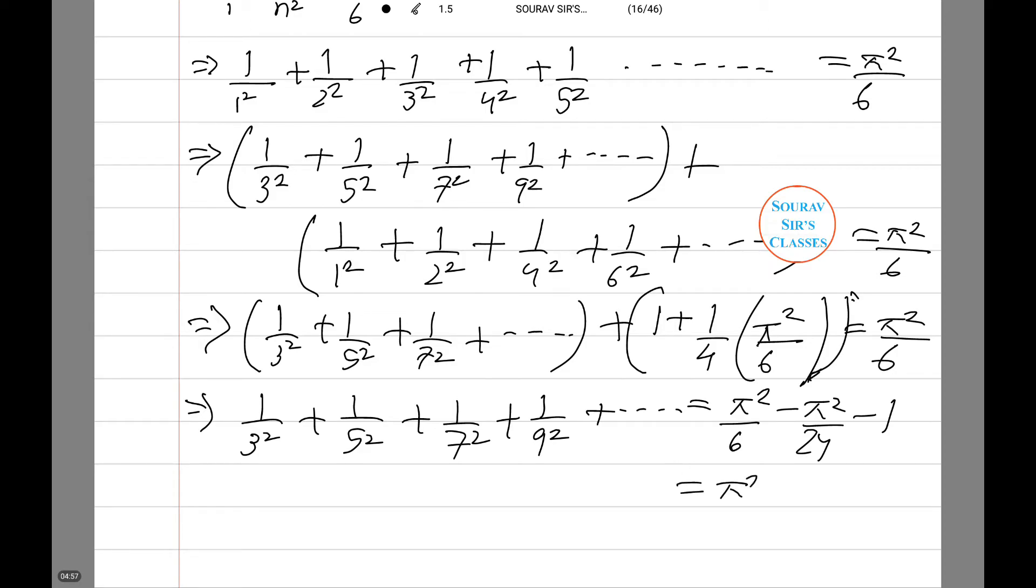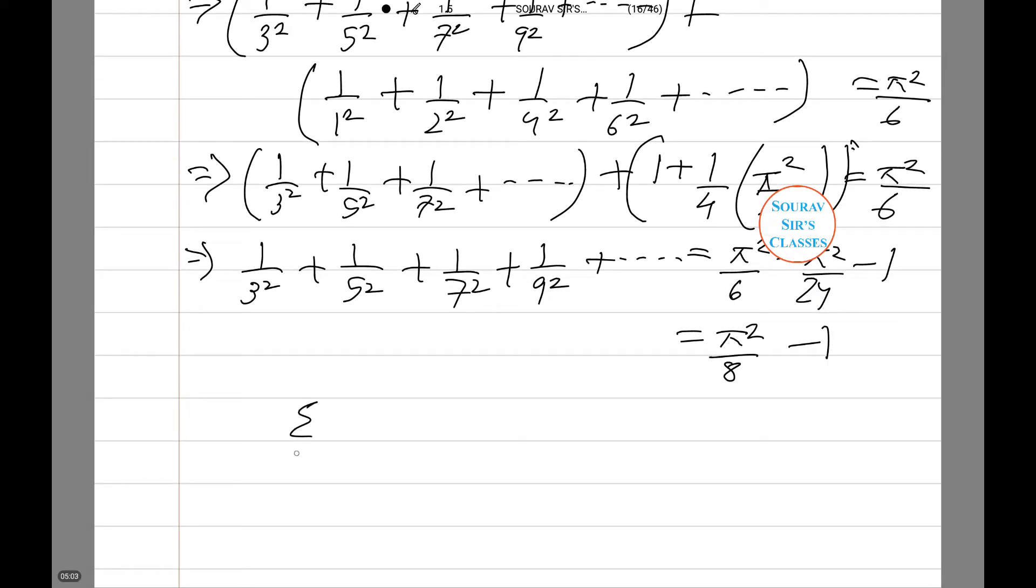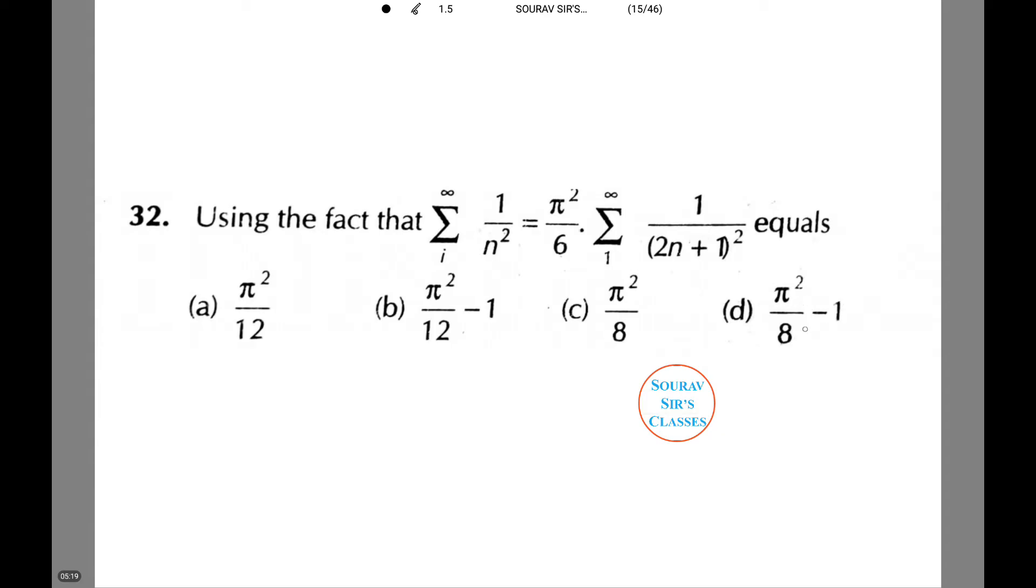Upon calculation, this comes as π²/8 - 1. Therefore, Σ(1 to ∞) 1/(2n+1)² equals π²/8 - 1. Hence, let's see which option is correct. Therefore, π²/8 - 1 is option D.